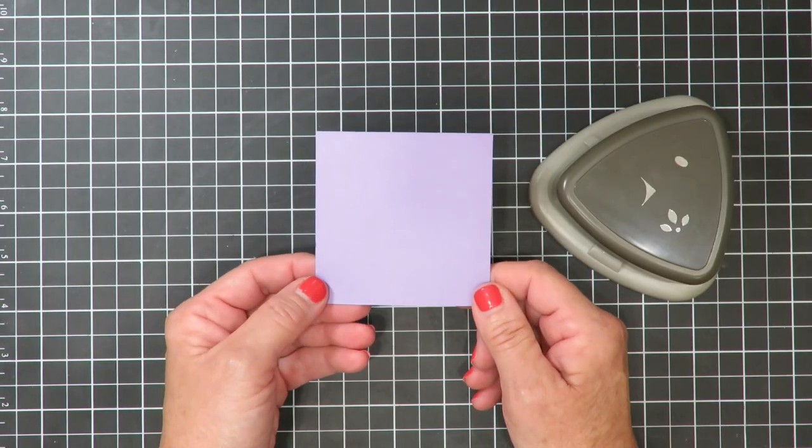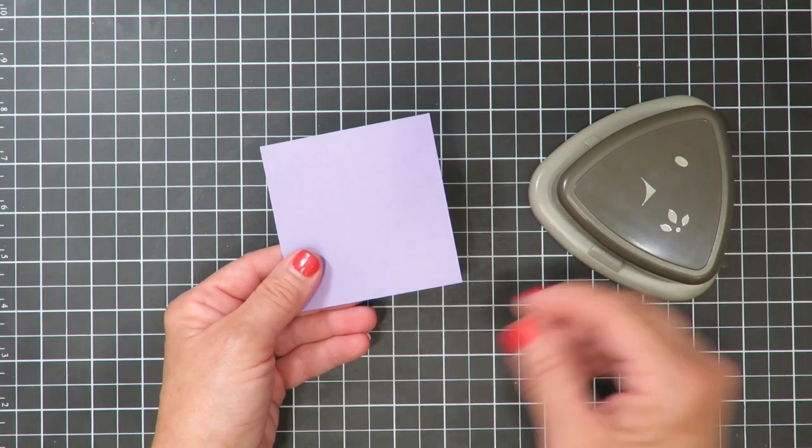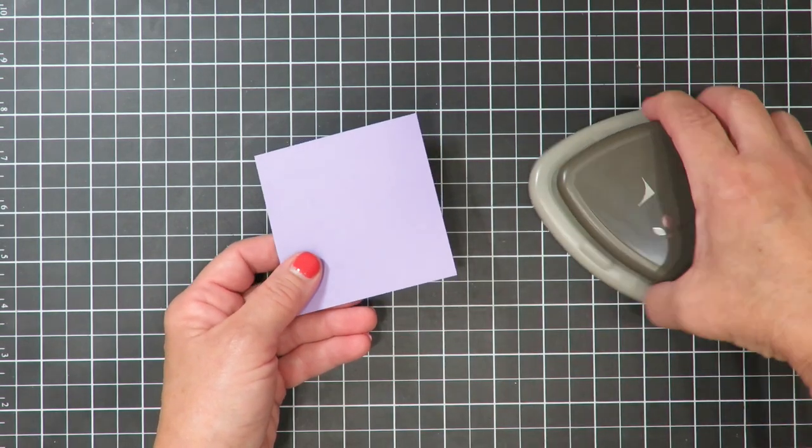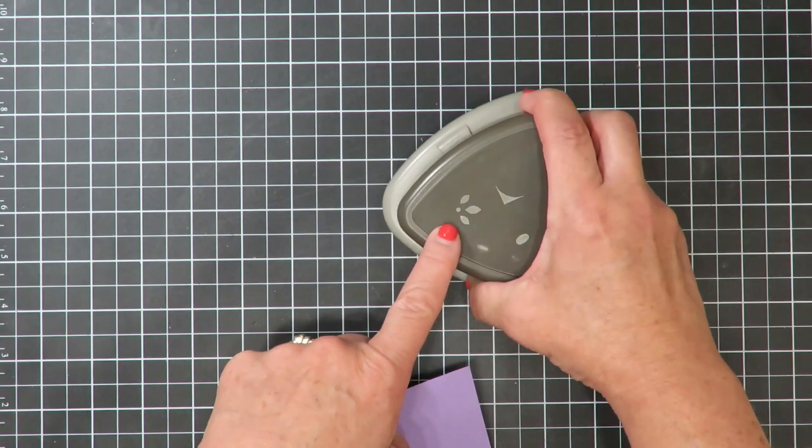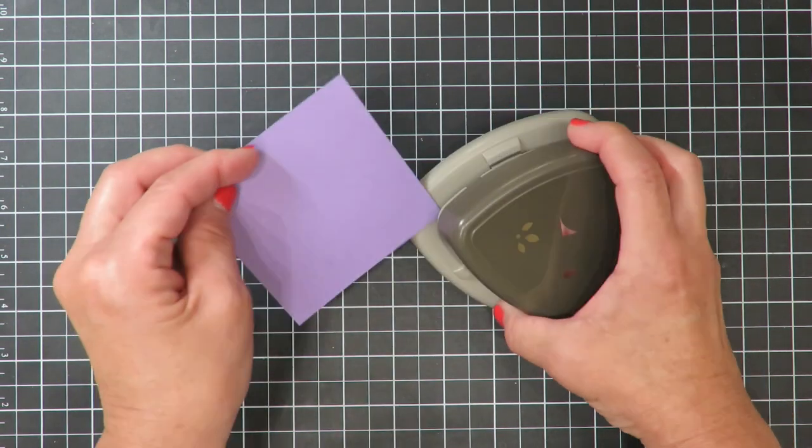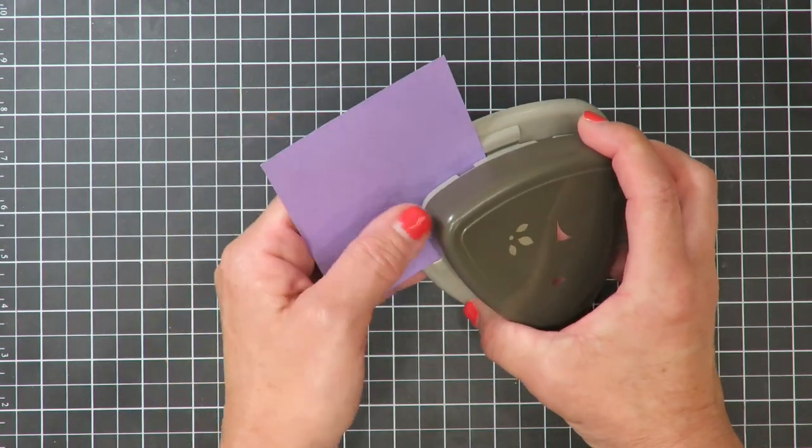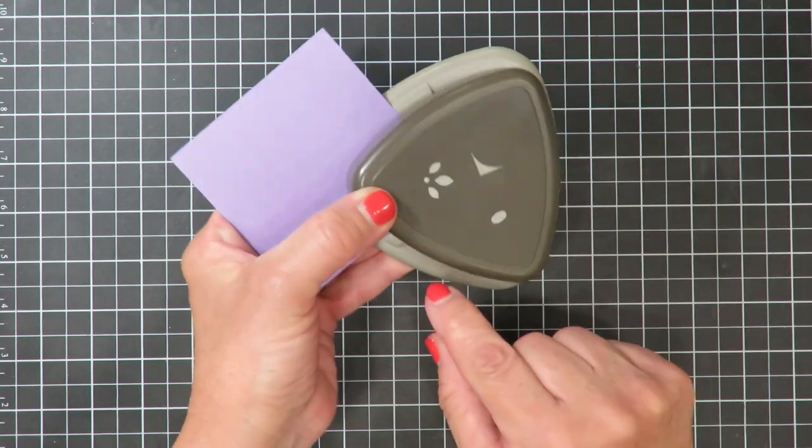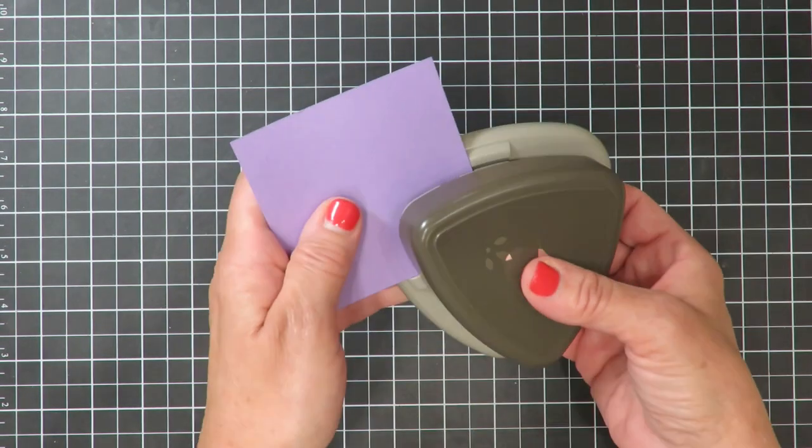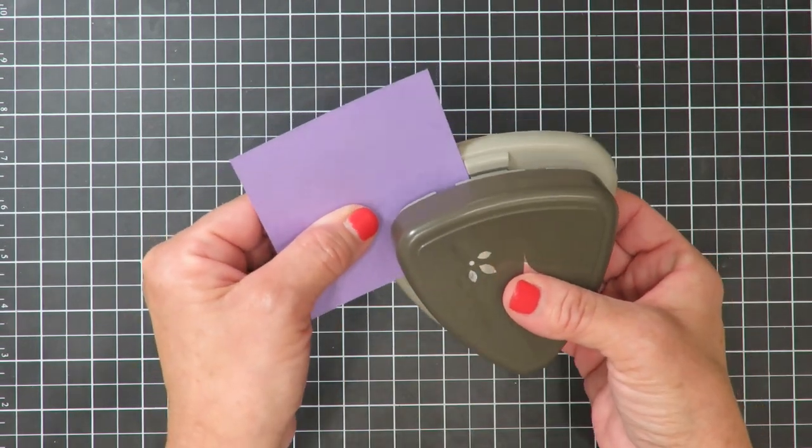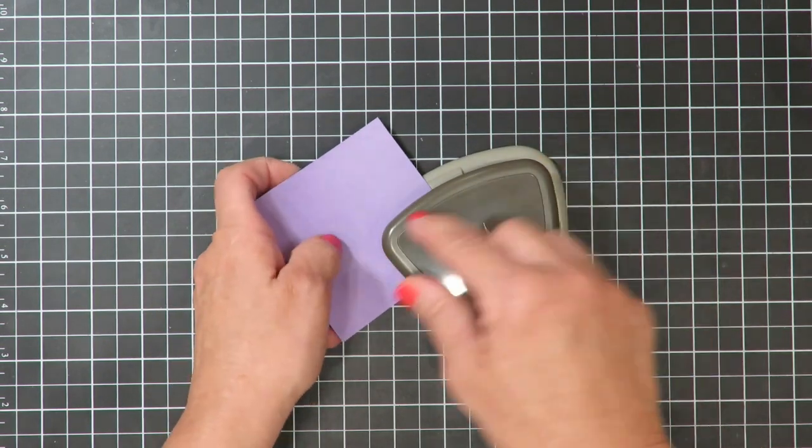I have a piece of Highland Heather cardstock and I just cut it in a square just to show you how it works. This one right here is going to create a really pretty decorative corner. So I'm just going to slip my corner in. You're going to see too that there's two guides, one here and one here. That's going to show you where the cardstock needs to line up so that you have a proper punched corner.